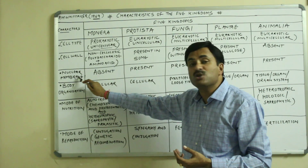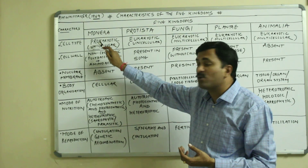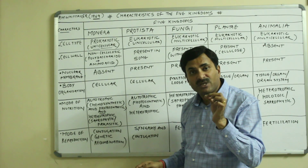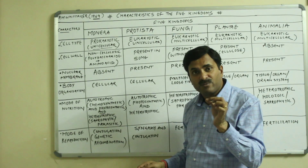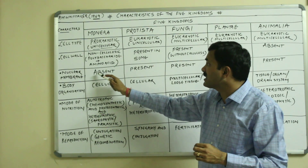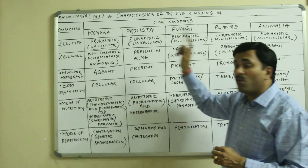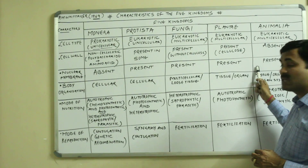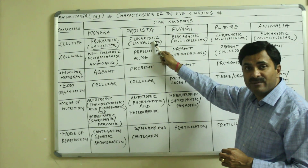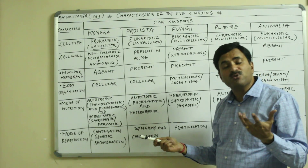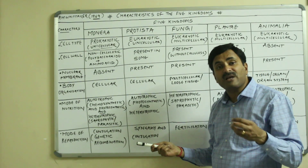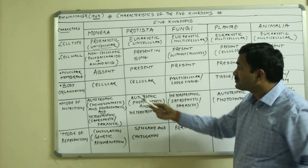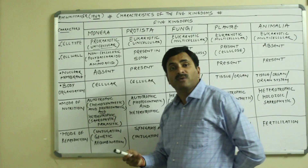Regarding the nuclear membrane: in prokaryotic cells the nuclear membrane is absent — they do not have a clear nucleus, only an incipient nucleus. In all other members — Protista, Fungi, Plantae, and Animalia — the nuclear membrane is present, because all have eukaryotic cell organization, and eukaryotic cells have a nucleus bounded by a well-defined nuclear membrane.